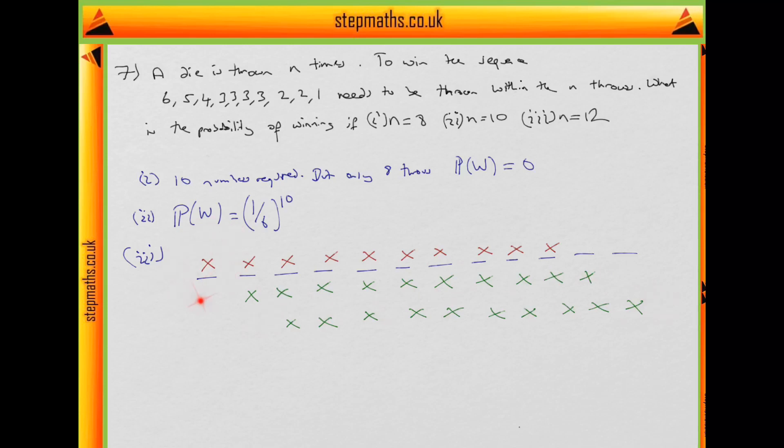But in fact, what we notice is when we have, take for example this option, we can have any number here. There's no restriction on the number here, and then we have any number here. So we actually aren't concerned with what these numbers are. So in fact, the probability for this one is 1 sixth to the 10, and then this one is 1 sixth to the 10, and this one is 1 sixth to the 10. So it's actually 1 sixth to the 10 plus 1 sixth to the 10 plus 1 sixth to the 10.